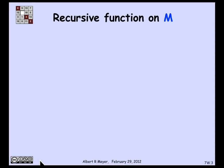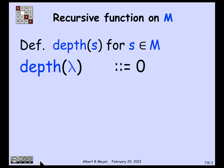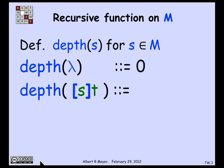Let's look at an example to make this recipe explicit and clearer. Let's think about a recursive function on the set of matched brackets. Let's define the depth of a string — the idea is it's how deeply nested are the successive pairs of left and right brackets. The depth of the empty string is 0. It has no brackets, so we call it depth 0. Now what about the depth of the constructor putting brackets around s and then following it by t?